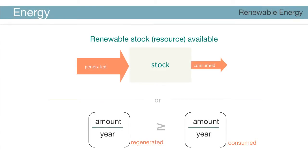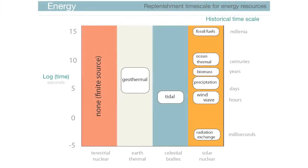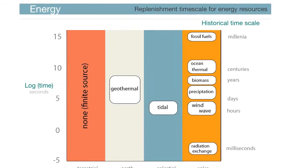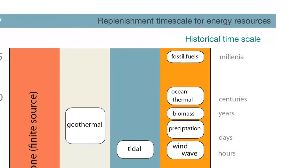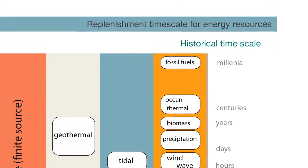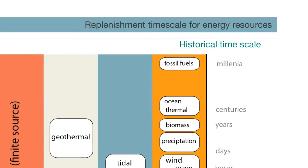What are the alternatives? A renewable resource would be one that is regenerated at a rate that exceeds the use rate. Recall that different energy resources have different replenishment time scales. As can be seen in this graphic, fossil fuels have a replenishment time scale of millennia, if at all.